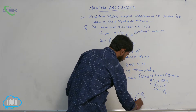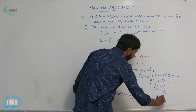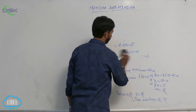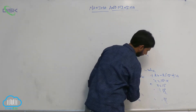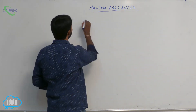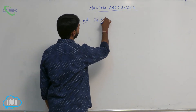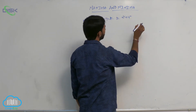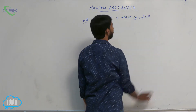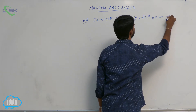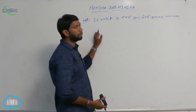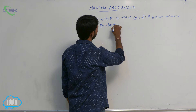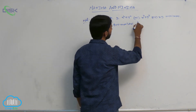Therefore the two numbers are 15 by 2 and 15 by 2. In general, if the sum of two positive numbers is some constant k and the sum of their squares (or product) is minimum, then the two numbers are k by 2 and k by 2.